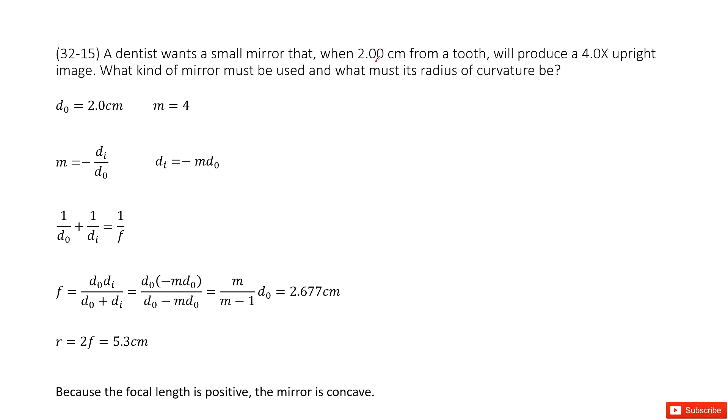The object distance is given as 2 cm, so we write it there, D0. And also the magnification is given, M equals 4. It tells us this is 4 times larger and upright, so this is a positive number.